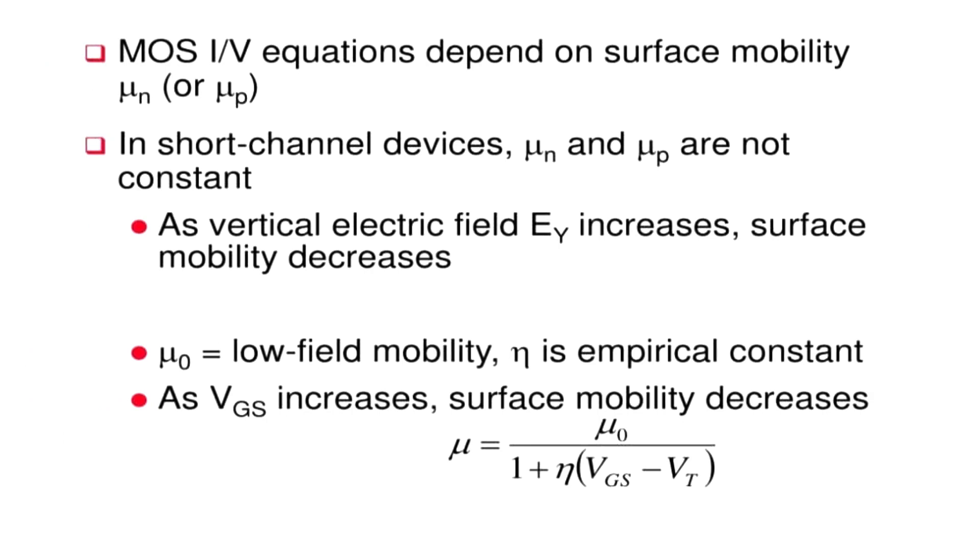The I-V equation depends on surface mobility μN or μP. In short channel devices, μN and μP are not constant. As vertical electric field EY increases, surface mobility μN or μP equals low-field mobility. Mobility is constant.